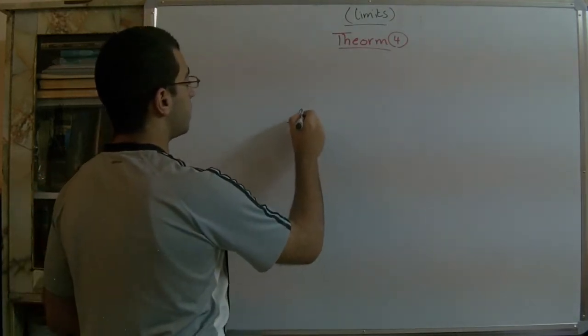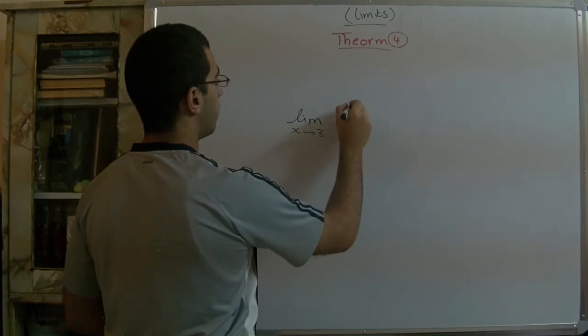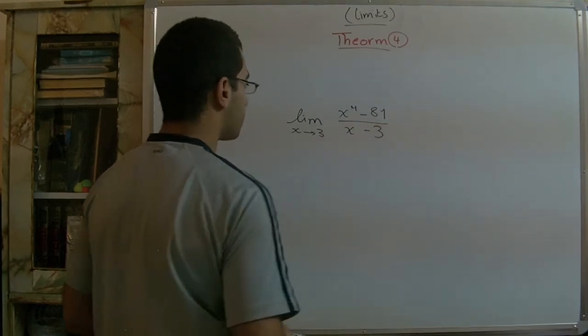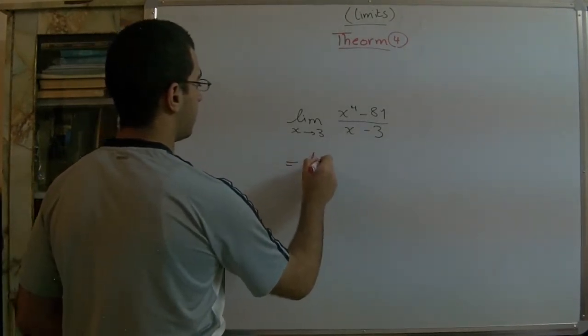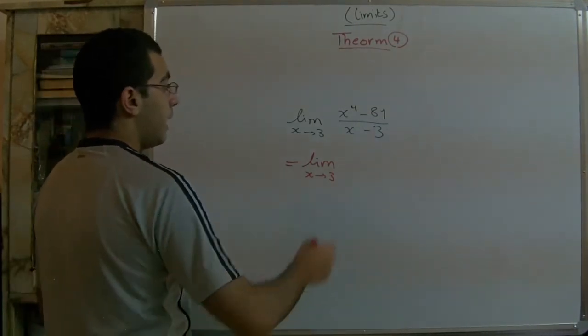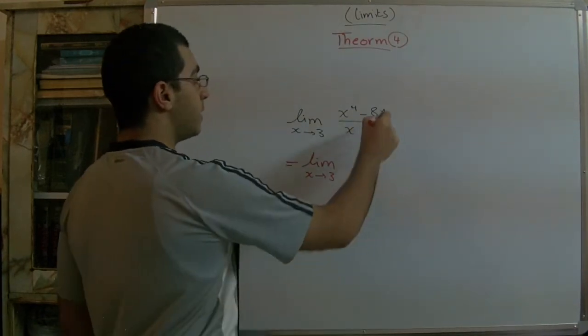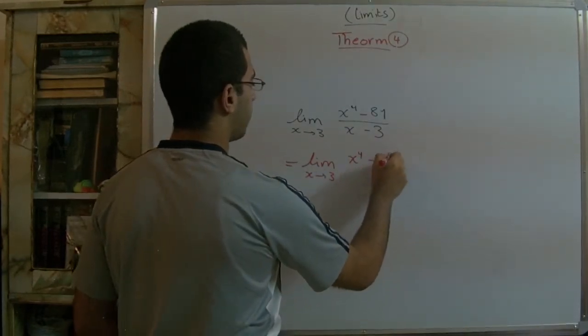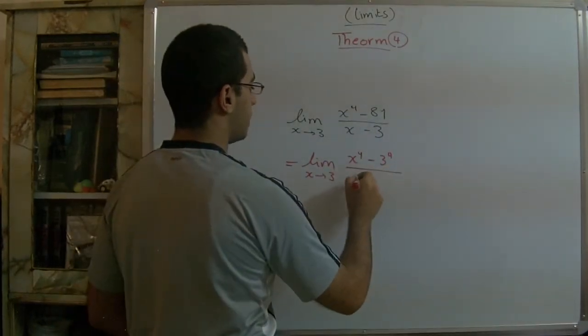Say that we have limit x approaches 3 and we have x^4 - 81 over x - 3. So here we have limit x approaches 3, and here x^4 - 3^4. We can type the 81 in another way saying that x^4 - 3^4, because 3^4 equals 81 over x - 3.